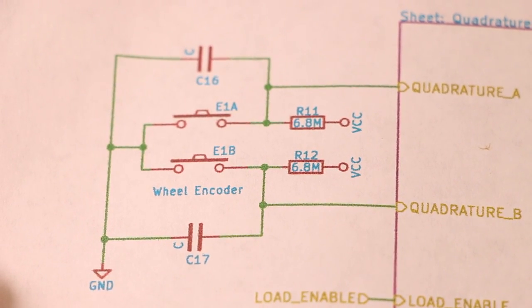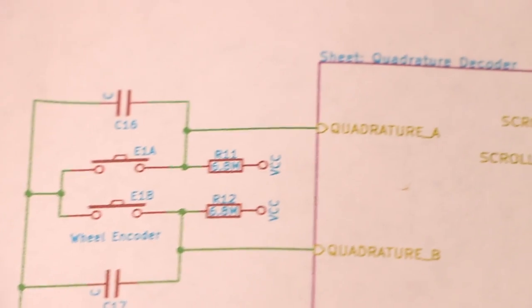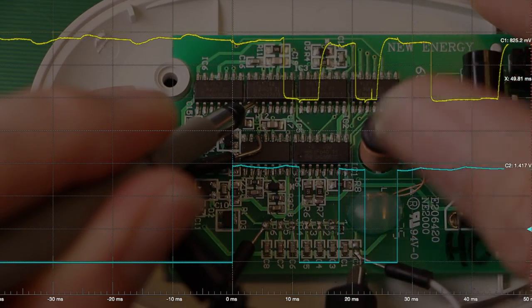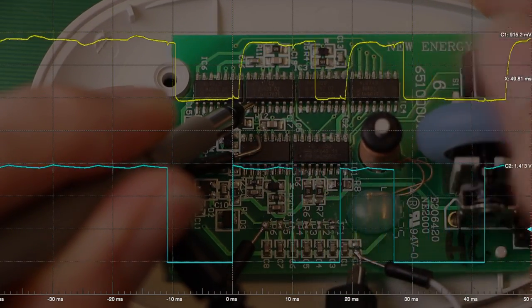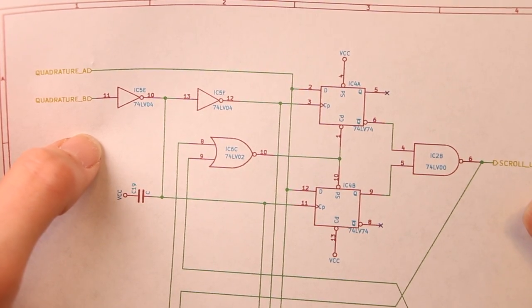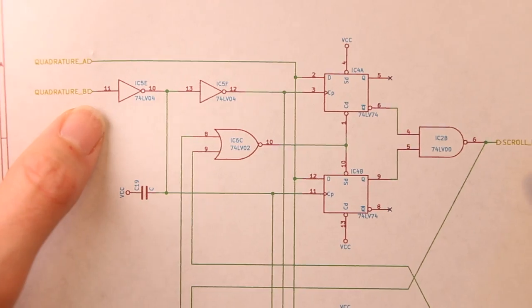Both of the quadrature outputs have a little bit of RC filtering on them before they go into the decoder circuit. There's the quadrature signal scrolling up, scrolling down. But now that we're inside the quadrature decoder we can see that the A and B signals are being used a little differently.